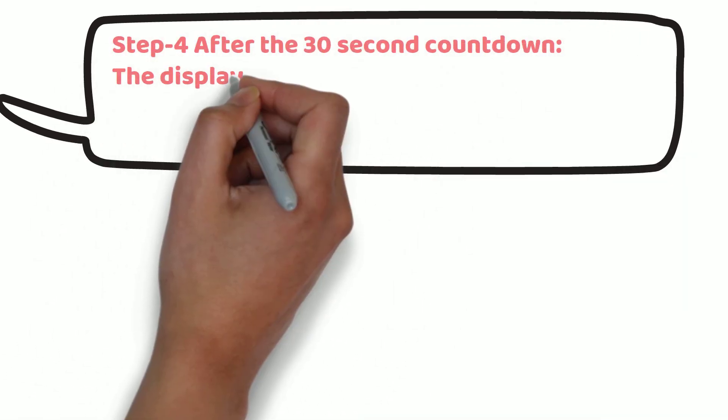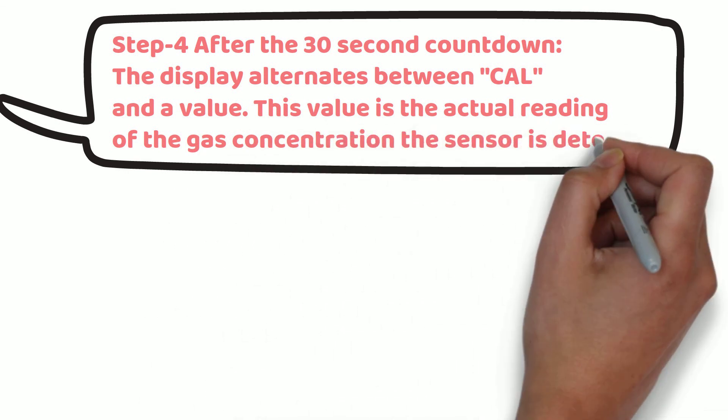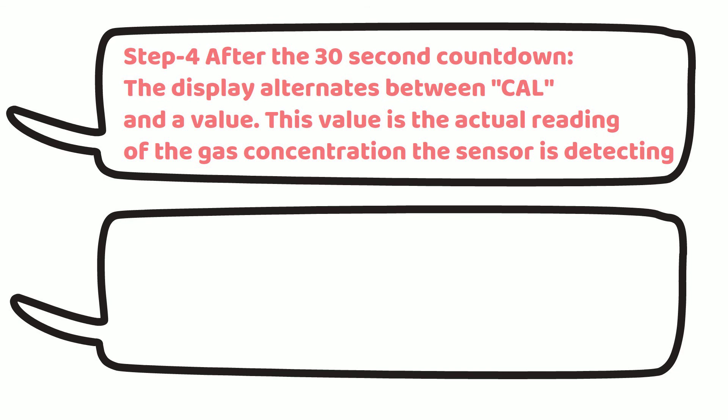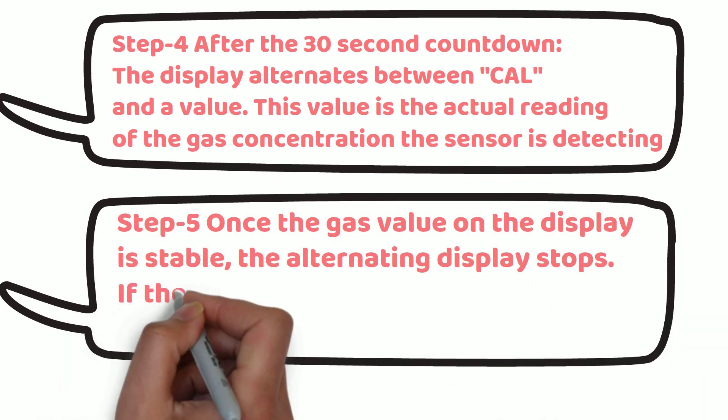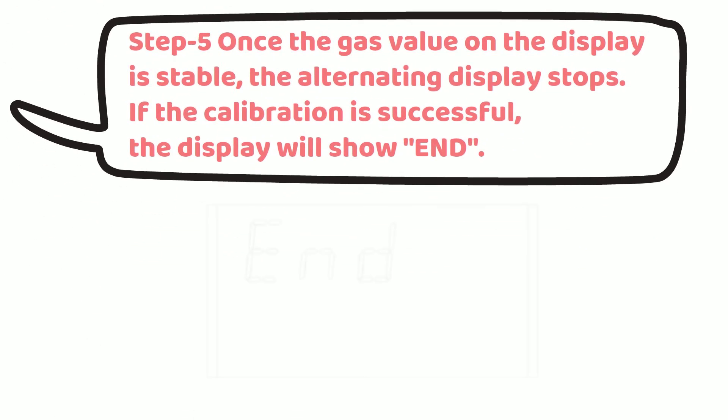After the 30 seconds countdown, the display alternates between cal and a value. This value is the actual reading of the gas concentration which the sensor is detecting. Once the gas value on the display is stable, the alternating display stops. If the calibration is successful, the display will show end. End on display indicates that zero calibration is successful.